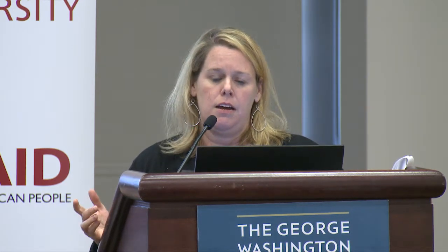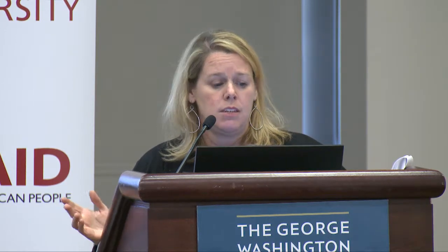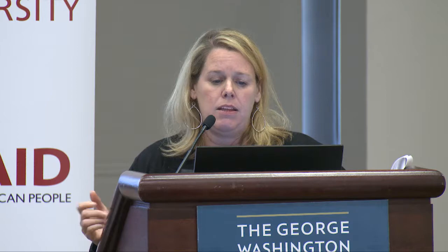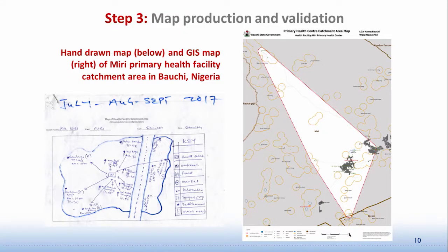Here you see two maps side by side. Previously, health facilities used hand-drawn maps, shown below. To the right is the same health facility catchment area shown as a geospatial map. In the hand-drawn map, all facilities look similar in distance to the health facility, but the electronic map clearly captures the actual distance spread — where each settlement falls in reference to the health facility.